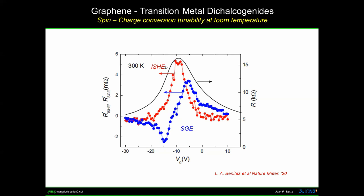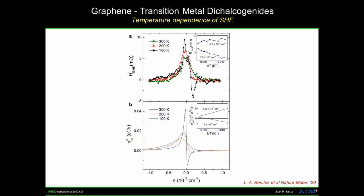We performed temperature-dependent measurements and observed a peak and dip for the spin Hall effect. We couldn't observe this peak and dip at room temperature, very likely because of electron-hole puddles in the system and temperature broadening. But as we cool down the system, we start to resolve this peak and dip. This was also very well reproduced by theory in the Stefan Roche group, who calculated the spin Hall conductivity in the low-disorder limit — there is a very good match between experiment and theory.